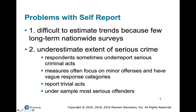It's also difficult to estimate trends because few of these surveys are nationwide and long-term. They tend to underestimate serious crime and over-report trivial acts, and they often focus on delinquency and minor offenses. They also tend to under-sample the most serious offenders — many self-report surveys are administered in schools, and students who are delinquent or truant are most likely to be serious offenders, yet are unlikely to be present in school to be surveyed.